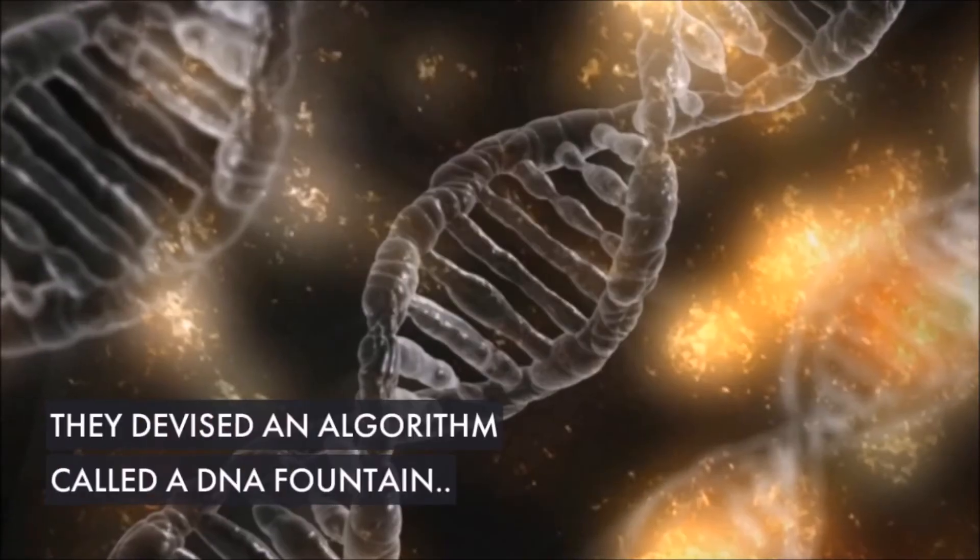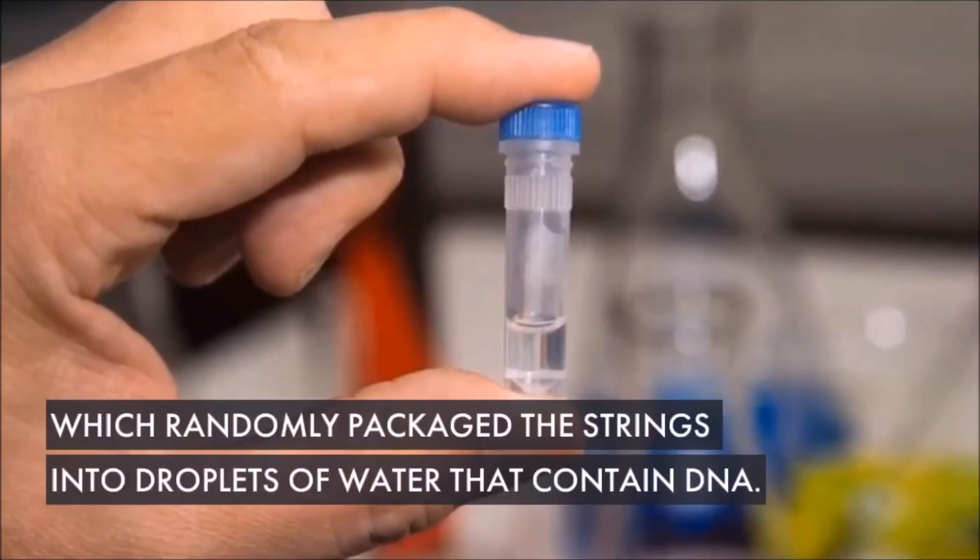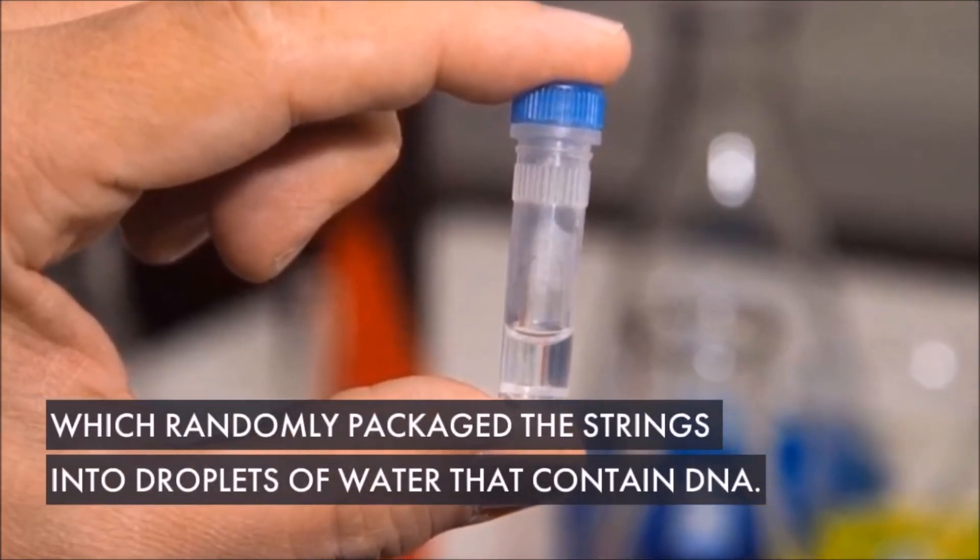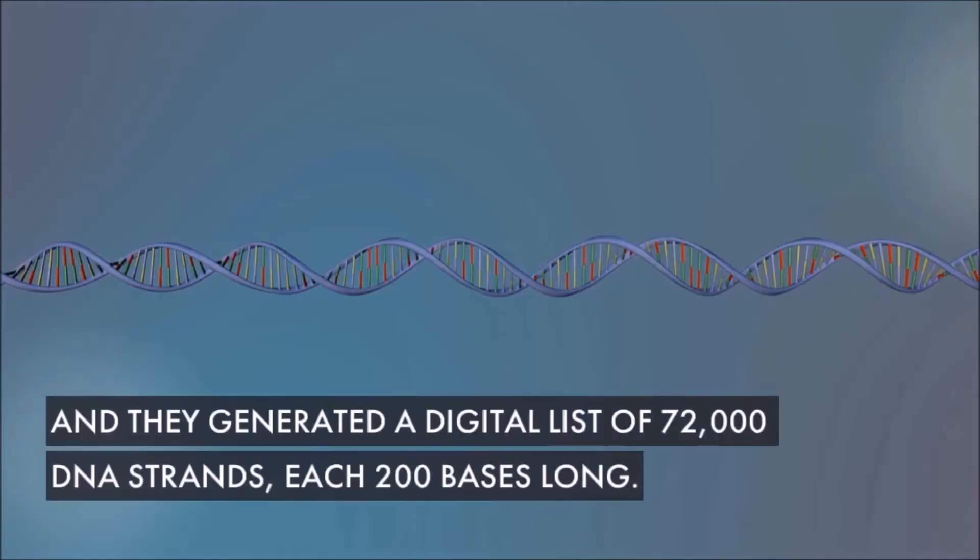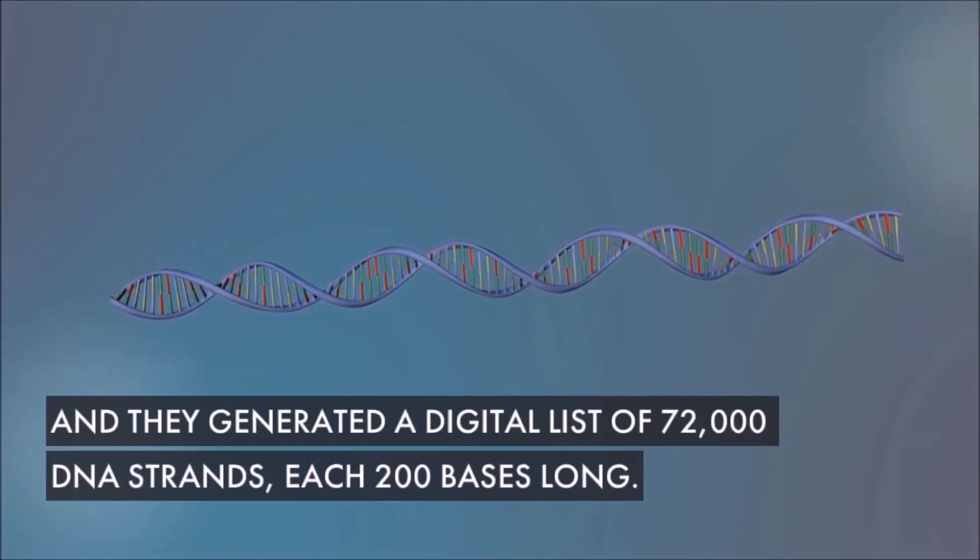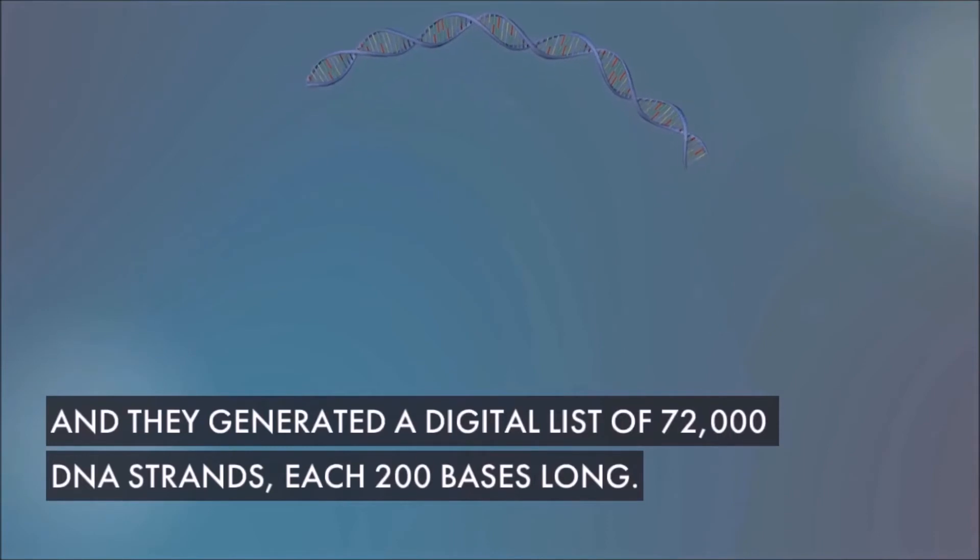They devised an algorithm called a DNA fountain, which randomly packaged the strings into droplets of water that contained DNA. Then researchers generated a digital list of 72,000 DNA strands, each 200 bases long.